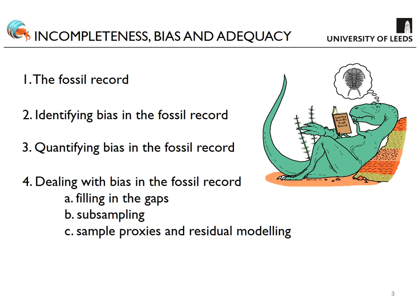We'll focus on three main ways to do this: a basic method of filling in the gaps in the data; subsampling; and sampling proxies and residual modelling. There are many other modelling and inference methods I won't focus on, so by no means think this talk provides an exhaustive list. I'll finish with reflections on incompleteness, bias, and whether our data is adequate, and attempt to draw up a broad best-practice protocol for identifying, quantifying, and dealing with bias.